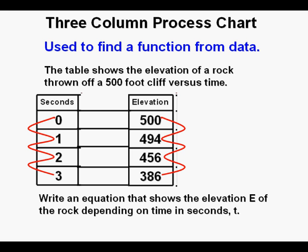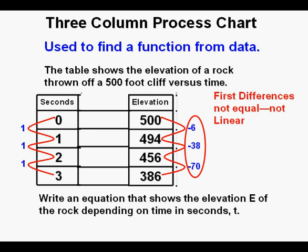We draw arrows on both sides of the table as we did in our earlier example. On the left, each input value is one unit apart. On the right side, subtracting top from bottom, we have negative 6, then negative 38, and finally negative 70 — those are the first differences. Since the first differences are not the same for each change in input value, the relation is not linear.